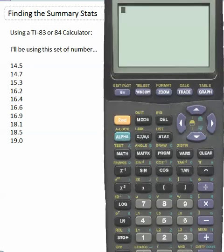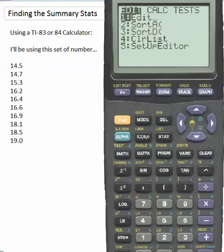First put in the list. I've put a list over here of numbers we can use as an example. You go into list by hitting the stat button, so I'm going to type stat and choose one. You can press the one, or you can just hit enter since it's already selected. I'll just press the one button.